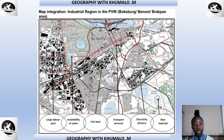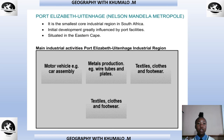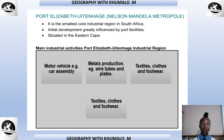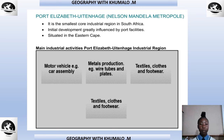Now let's look at Port Elizabeth Winterhaven, also known as the Nelson Mandela Metro. It is the smallest core industrial region in South Africa. Its initial development was greatly influenced by port facilities and it is situated in the Eastern Cape. Main industrial activities include motor vehicle assembly, car assembly, and metal production.